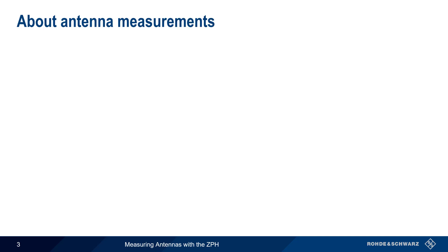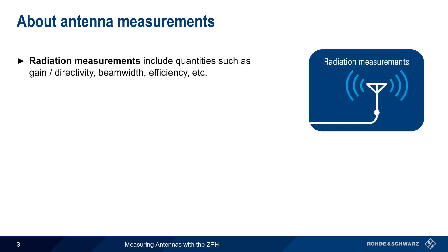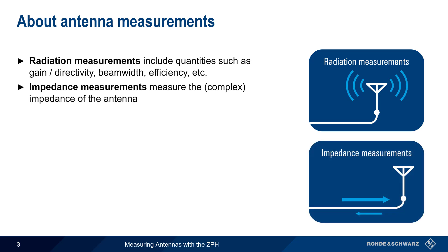There are actually two types of antenna measurements. One type is radiation measurements, which describe how well the antenna radiates a signal. This includes the antenna's gain and directivity, beam width, efficiency, etc. In this presentation, we'll be looking at the other type, which is antenna impedance measurements. The impedance of an antenna determines how much of the input or transmitted power is absorbed or radiated by the antenna, and how much is returned to the transmitter.